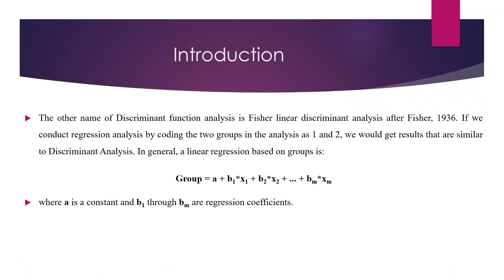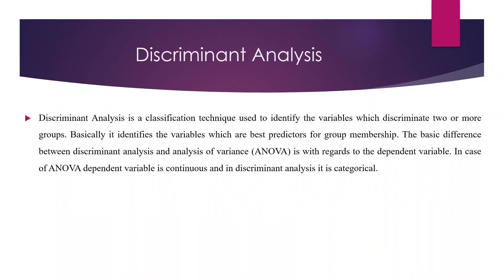The other name of discriminant analysis is Fischer Linear Discriminant Analysis, given after Fischer 1936. In regression analysis our dependent variable is continuous, but in discriminant analysis our target variable is categorical. If we assign groups 1 and 2 to the dependent variable in regression analysis, we get the same result as discriminant analysis. Basically it is a classification technique — it is exactly opposite of ANOVA. In ANOVA the dependent variable is continuous and independent variables are categorical, whereas here the dependent variable is categorical and other variables are continuous.